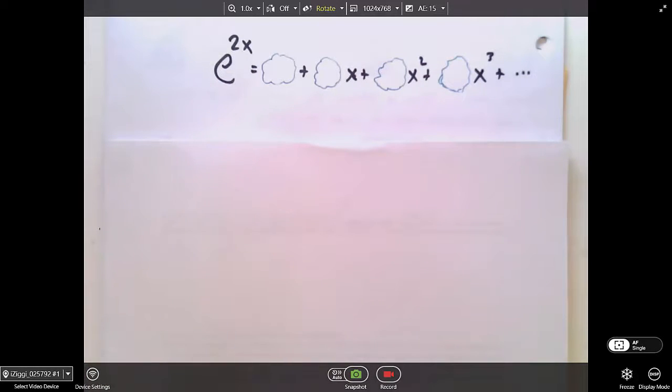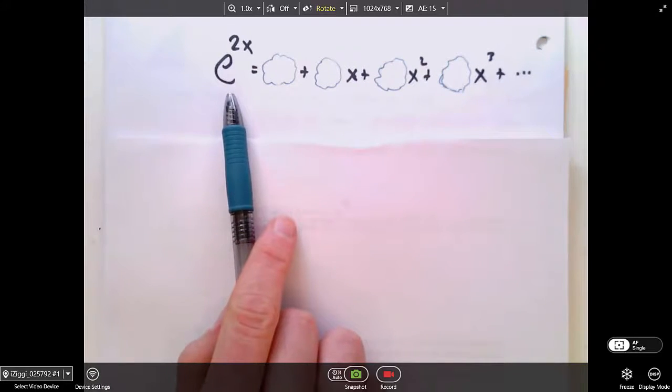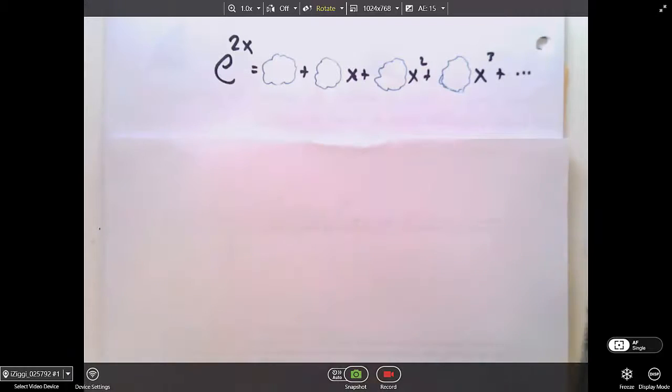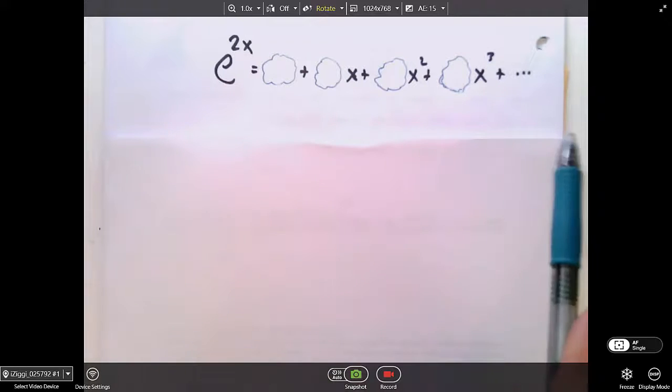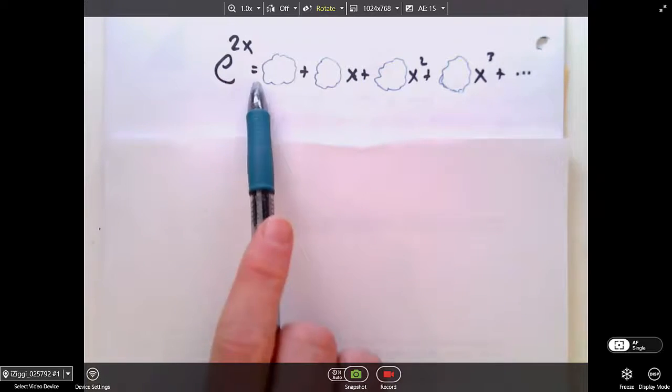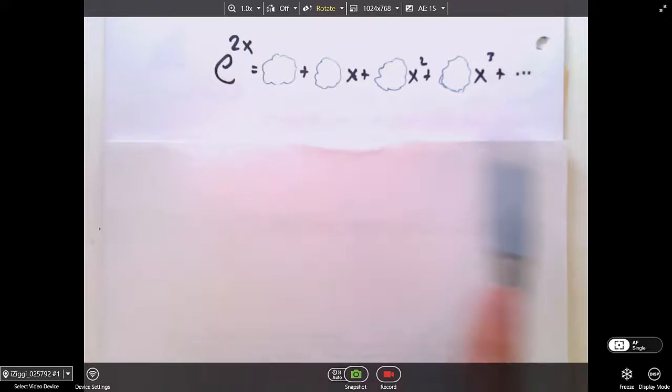Now, this might sound to you immediately like it's both intentionally making things more complicated than they need to be, for no reason at all. Because why would you take a perfectly nice function like e to the 2x and represent it as something infinite? That seems needlessly complicated. And even if you could do it, why would you possibly want to do it? This is such a nice function to work with, and something infinite feels like it's going to be very difficult to work with.